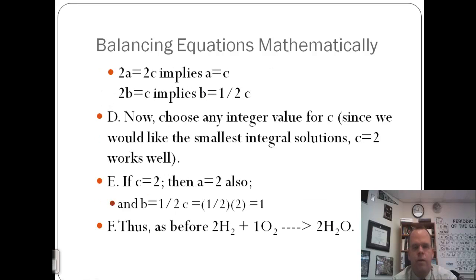So we have 2A equals 2C, or A equals C, and we have 2B equals C. Now, we're going to choose an integer value for one of the letters, and then use that to solve all the other ones. We're going to try to find the one that's going to be smallest, make that 1 or 2, and then work our way up from there.